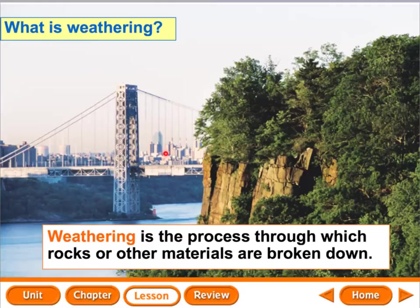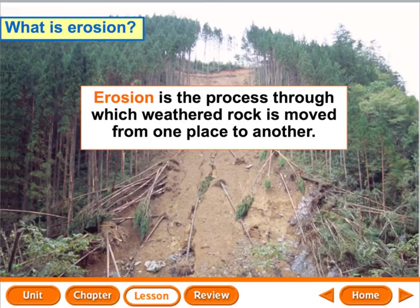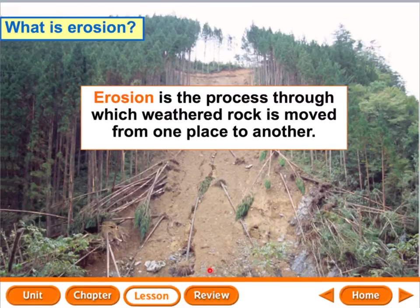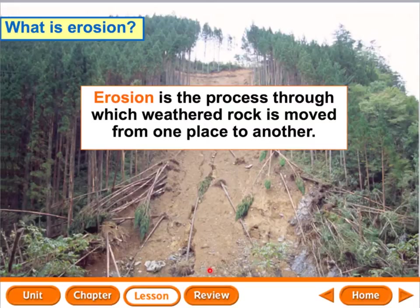No movement yet — but let's talk about the movement now: erosion. Erosion is the process through which weathered rock is moved from one place to another. We went from big rock to little rock, and now the little rocks are going to move from here to here. Land can be eroded in five ways: gravity, glaciers, running water, waves, and wind.